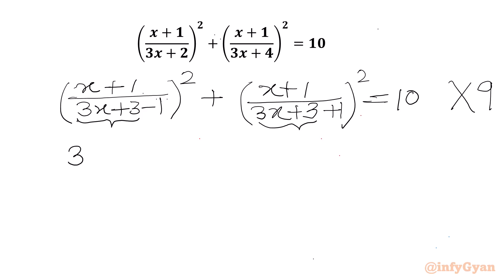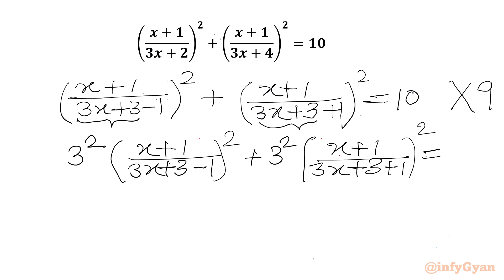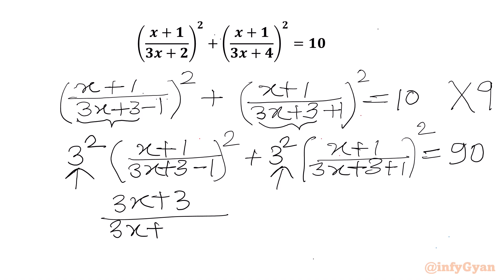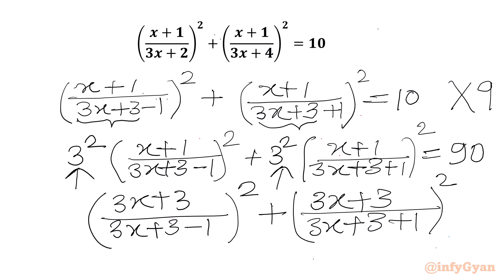So I can write 3² as 9 times (x+1)/(3x+3−1)² plus 3² times (x+1)/(3x+3+1)² equal to 90. Taking the 3 into the numerator: (3x+3)/(3x+3−1)² plus (3x+3)/(3x+3+1)² equal to 90.